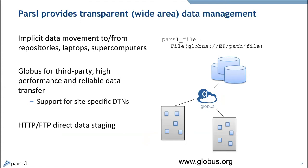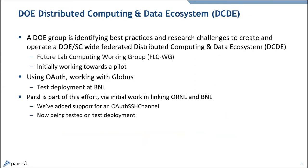We also have transparent wide-area data management. We have a file class, so you can have a Globus-path file. When we run that on a remote system, we stage the file in, work on it, and stage it back if appropriate — all in the background using Globus transfer. We can also use HTTP and FTP for data staging. For DOE people here, there's an activity called DCDE — a group looking at best practices and challenges to federate distributed computing and data systems across DOE platforms. It uses OAuth and Globus, with a test deployment at Brookhaven. We've added support for an OAuth SSH channel being tested at Oak Ridge.